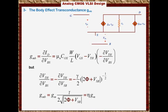So the body effect transconductance is a function of Gm and the DC bias voltage Vsb. The difference between the source and the body voltage affects the Gm.